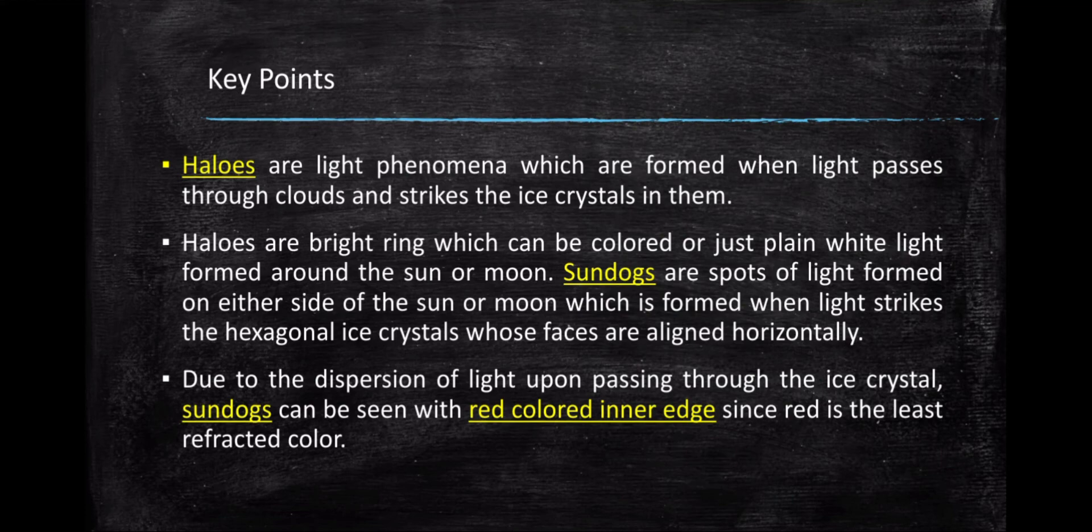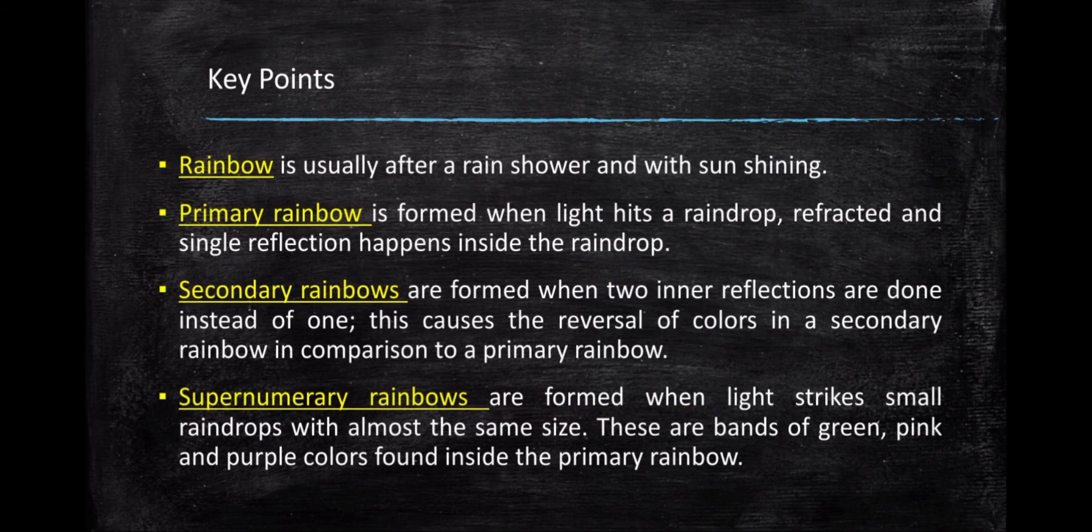Here are some key points to further understand the discussion. Halos are light phenomena which are formed when light passes through clouds and strikes the ice crystals in them. Halos are bright rings which can be colored or just plain white light formed around the sun or moon. Sundogs are spots of light formed on either side of the sun or moon which is formed when light strikes the hexagonal ice crystals whose faces are aligned horizontally. Due to the dispersion of light upon passing through the ice crystals, sundogs can be seen with red color inner edge since red is the least refracted color.